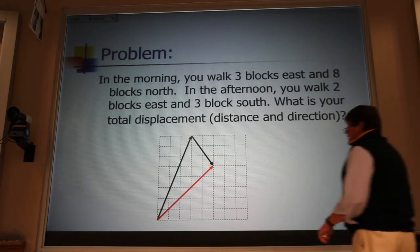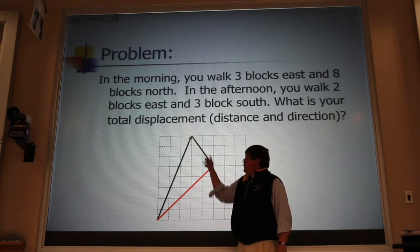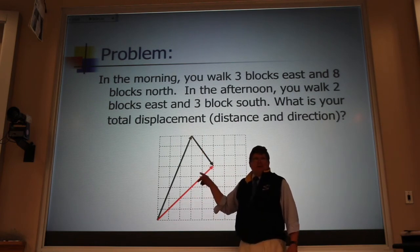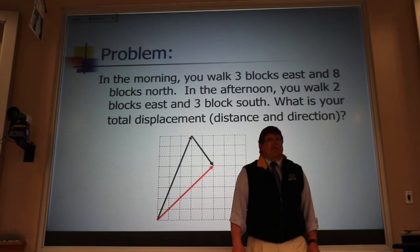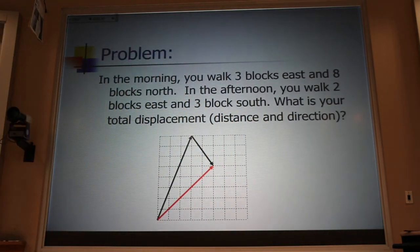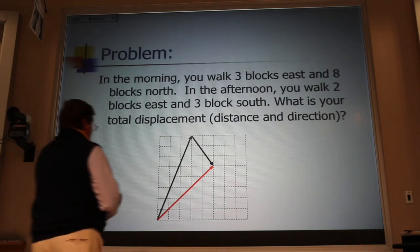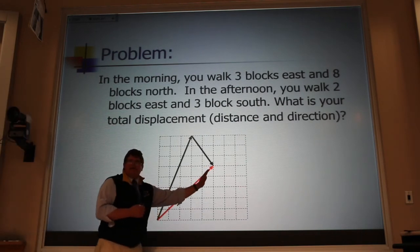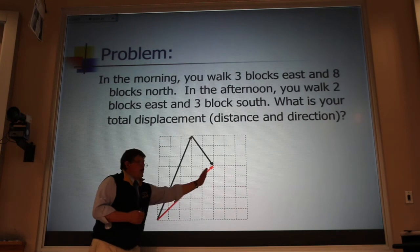Well, you're not guaranteed that that's going to be a right triangle. Indeed, if I had had three walks in this problem instead of two, that wouldn't even be a triangle. The triangle you always look for is the triangle that's made up of the vector and its components.